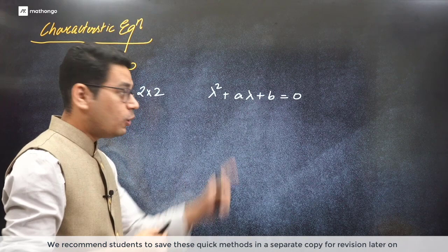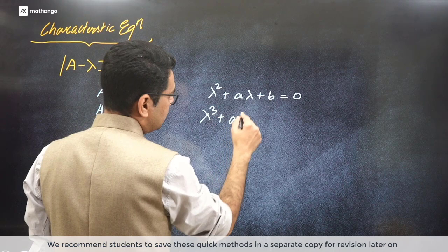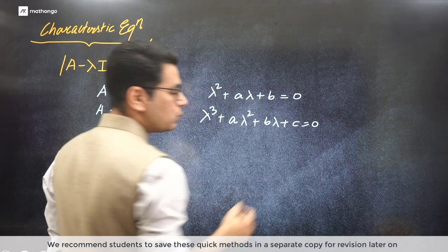Similarly, if A is a 3 cross 3 matrix, then the equation that forms will be of cubic nature: A times lambda cube plus B times lambda square plus C times lambda plus D equal to 0. And what is the advantage of the characteristic equation?